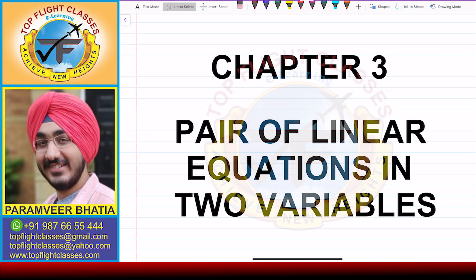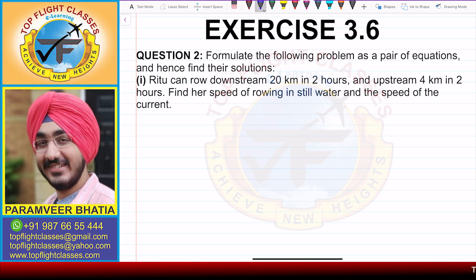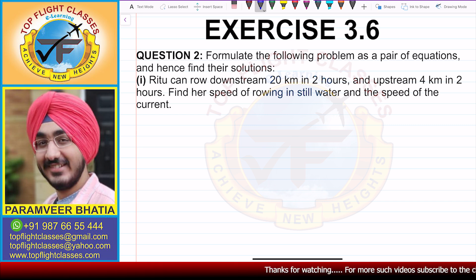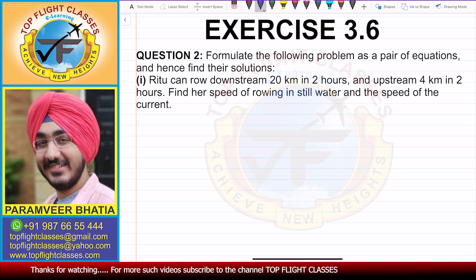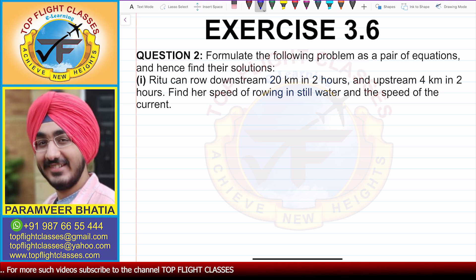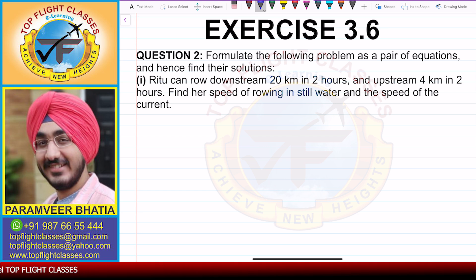Hey guys, welcome to my channel Top Flight Classes. In this video we will solve the first part of question number two of Exercise 3.6. Question number two says: formulate the following problem as a pair of equations and hence find their solutions. The first part is: Ritu can row downstream 20 kilometers in two hours and upstream four kilometers in two hours. Find her speed of rowing in still water and the speed of the current.